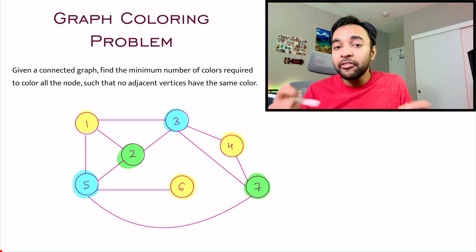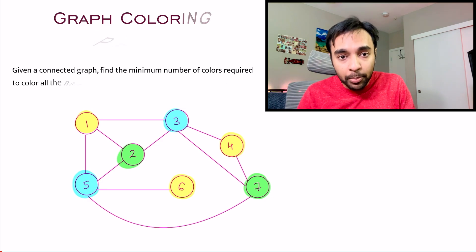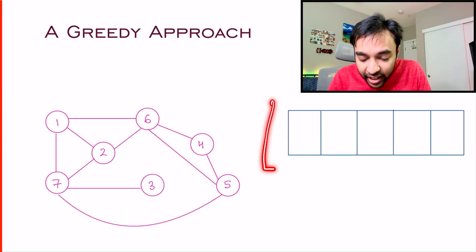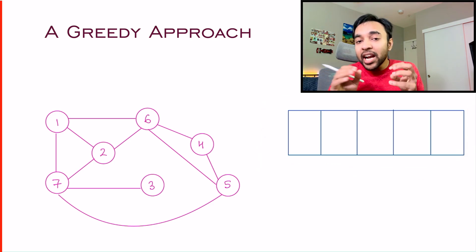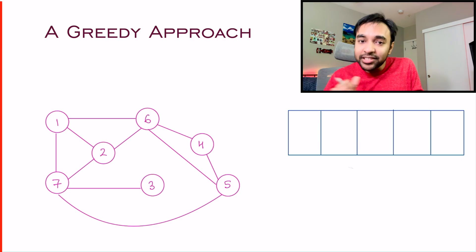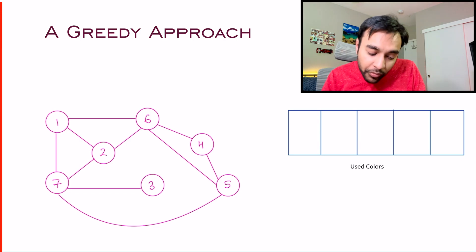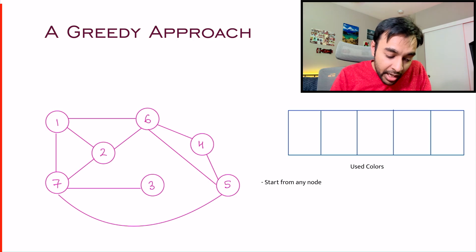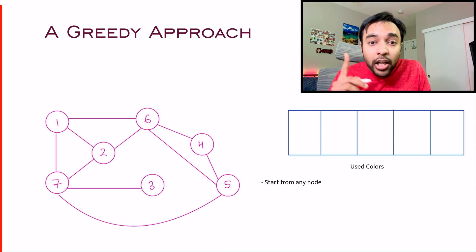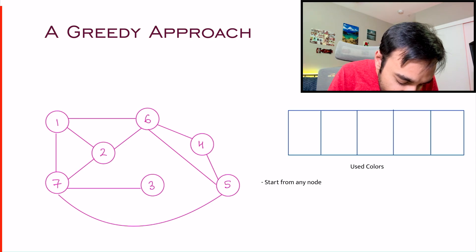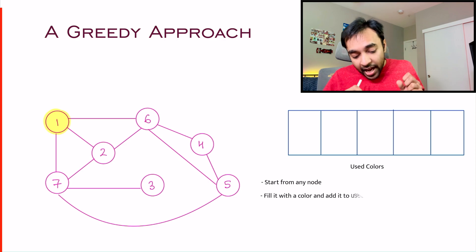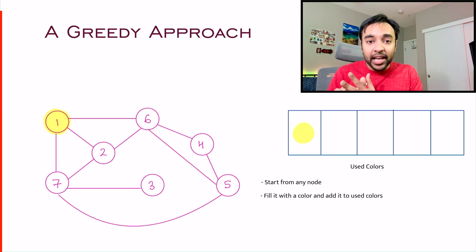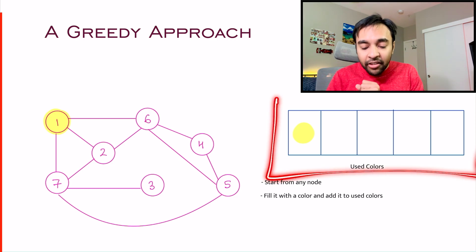There exists one greedy approach by which you can go about performing the graph coloring problem. Let us say I have this graph in front of me, and I have some sort of an array where I am maintaining all the different number of colors that I have used. You have to start somewhere — let us say I am starting at node number 1. You have to fill it with some color, so I am going to color this node with the color yellow. As soon as I take up one color, I am going to store this color in my array, telling me that I have used one of this color.